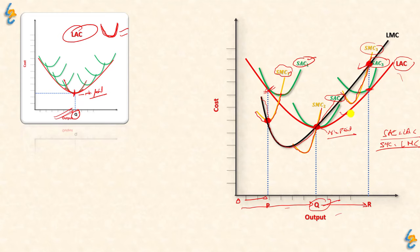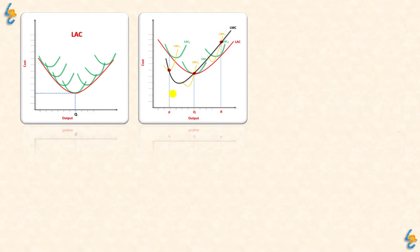At the optimum output, short run marginal cost equals long run marginal cost. We have now derived two curves: long run average cost and long run marginal cost. Long run average cost is U-shaped. Long run marginal cost is also first downward sloping then upward sloping, cutting the average cost curve at its minimum point.